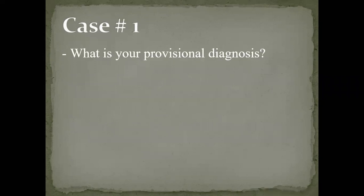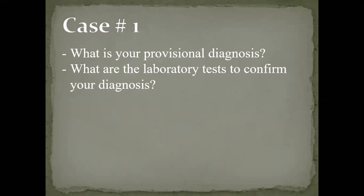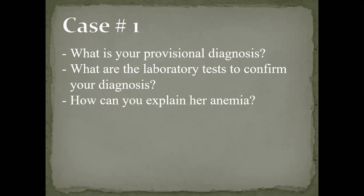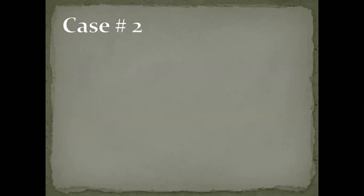The provisional diagnosis is systemic lupus erythematosus. Key questions to answer include: what laboratory tests confirm the diagnosis, how to explain her anemia given the multiple forms of anemia in lupus, and whether we can expect more abnormalities in the blood picture.